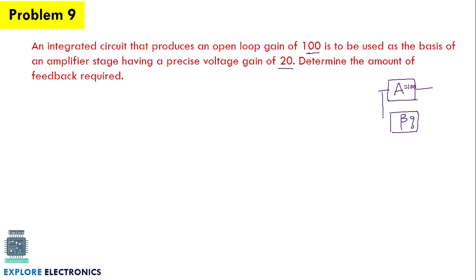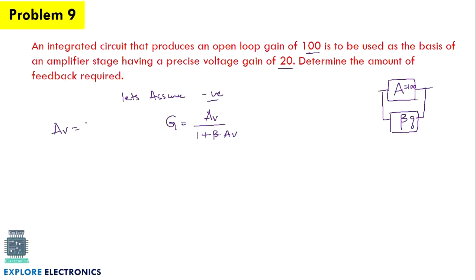We can assume the feedback is negative. For negative feedback, the overall gain G is equal to Av divided by 1 plus beta times Av. Here Av is the open loop gain without feedback, which is 100. The precise voltage gain is the overall gain G, so G equals 20.